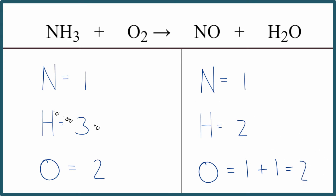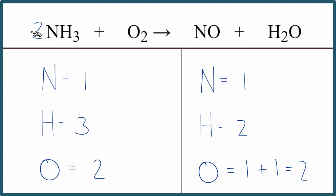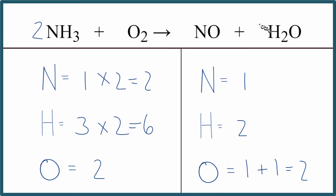It looks like the hydrogens are the only thing that aren't balanced. This is an odd number, so we're going to have to get this to be an even number to balance it. Let's put a two as our coefficient. This two applies to everything, so we have one times two — that gives us two nitrogens, but three times two gives us six hydrogens. Now I can just put a three over here: two times three gives me six hydrogens, so those are balanced.